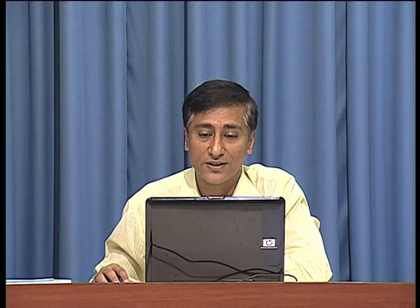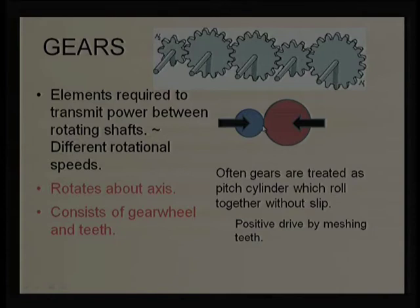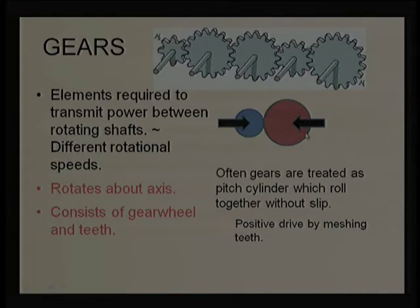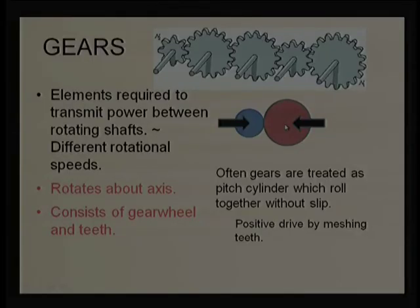Another problem is the possibility that the discs may not be in contact at all. There is a possibility that the disc will not be in contact — sometimes we get from 1000 rpm to 200 rpm, and sometimes from 1000 to 0 rpm, meaning no transmission, which is highly undesirable — almost 0 percent efficiency. To avoid this, we try to preload these two discs so they remain in contact irrespective of environmental conditions.